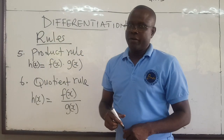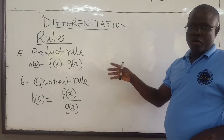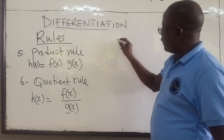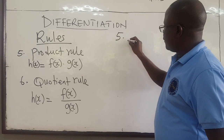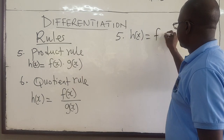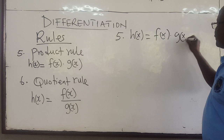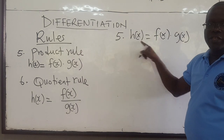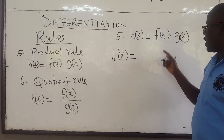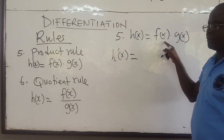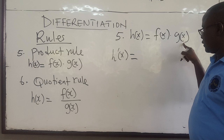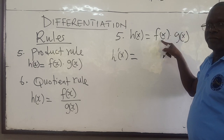Here we want to look at two more rules, very important ones. Rule number five says that if I have a function which is the product of two functions — f(x) times g(x) — then to find the derivative h'(x), what you do is leave one of the functions and find the derivative of the other, then plus leave the other one and find the derivative of that.